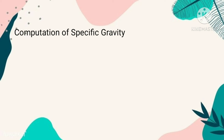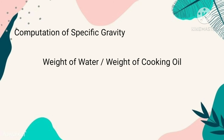The last step is to compute the specific gravity by dividing the weight of water by the weight of oil, which is 40 grams divided by 40 grams, equal to 1. There is no unit for specific gravity since all units were cancelled.